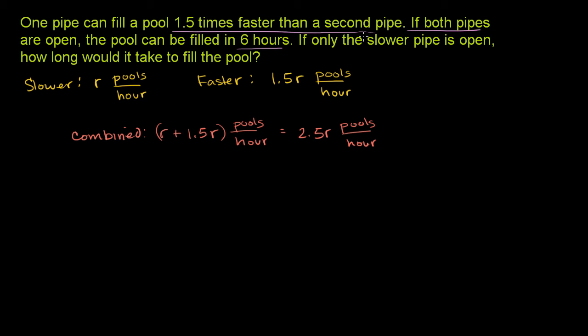And they're also telling us that their combined rate, if both pipes are open, the pool can be filled in 6 hours. So they're telling us that the combined rate is 1 pool in every 6 hours. So the combined rate is also equal to 1 pool in every 6 hours, or 1 sixth of a pool per hour.